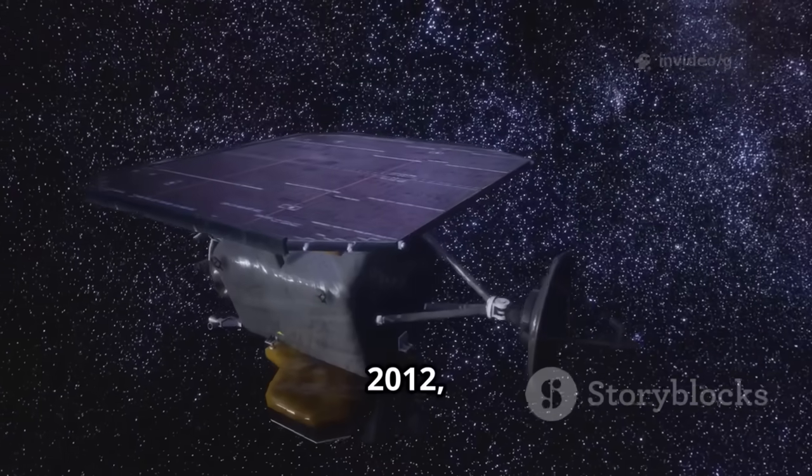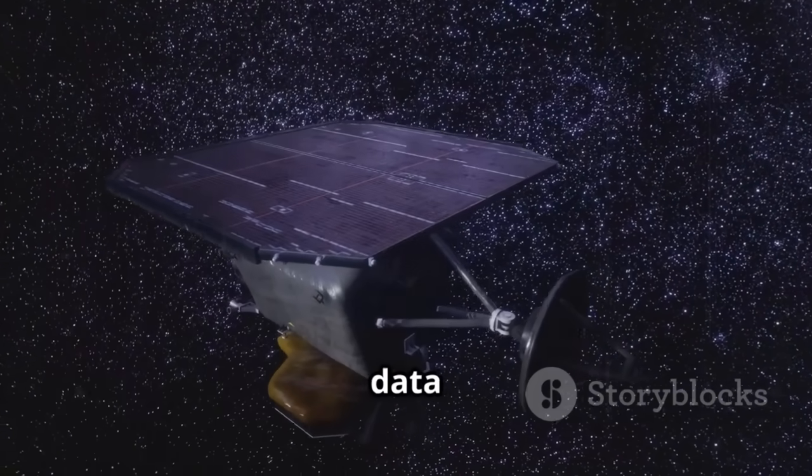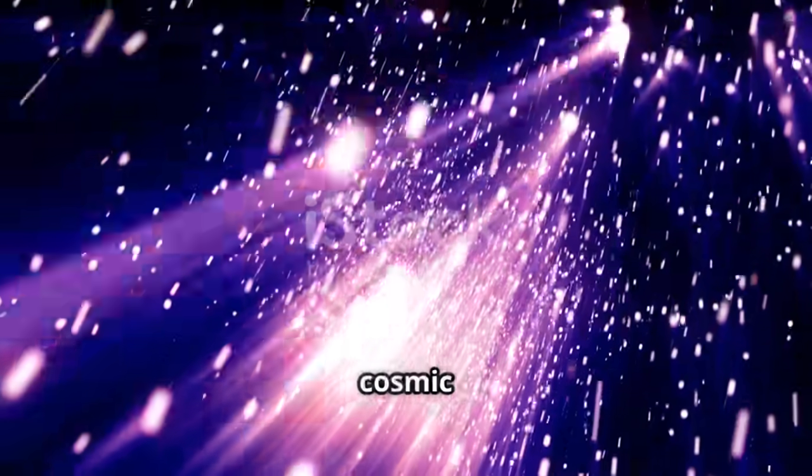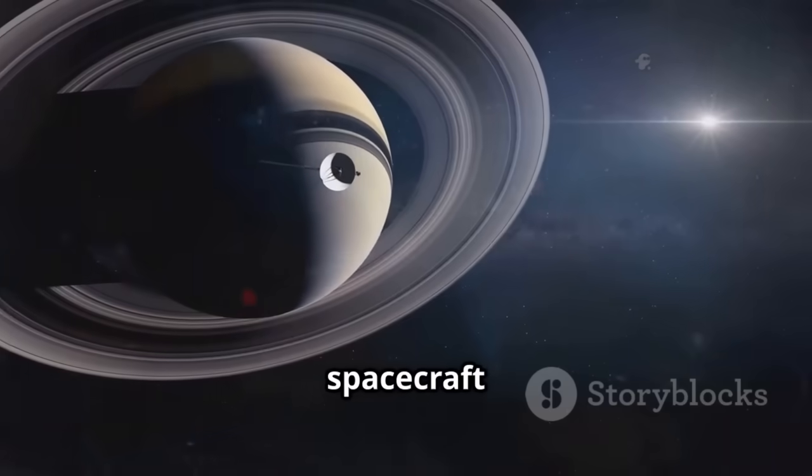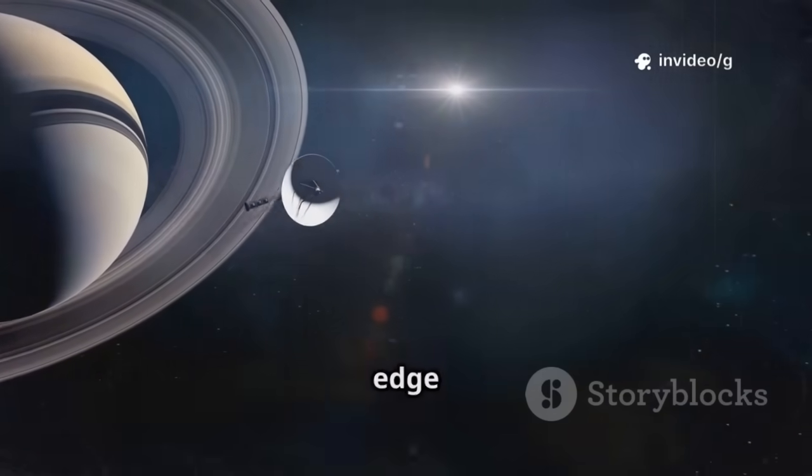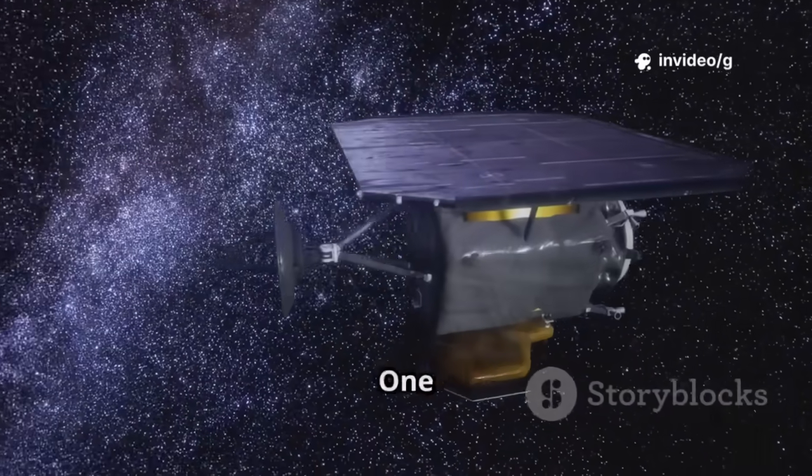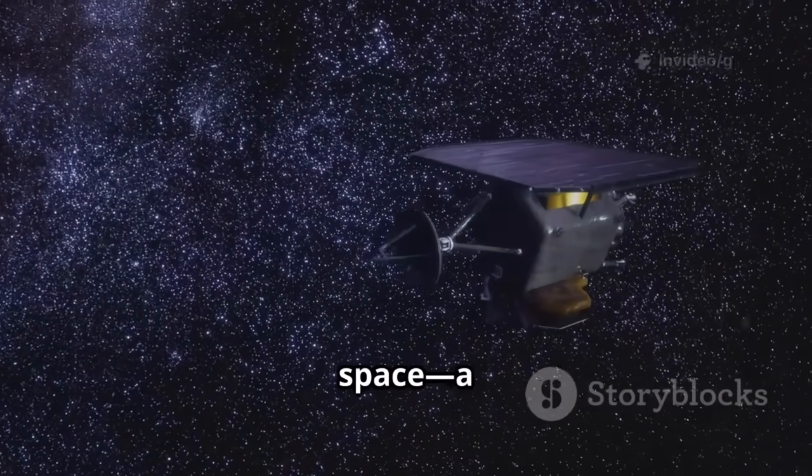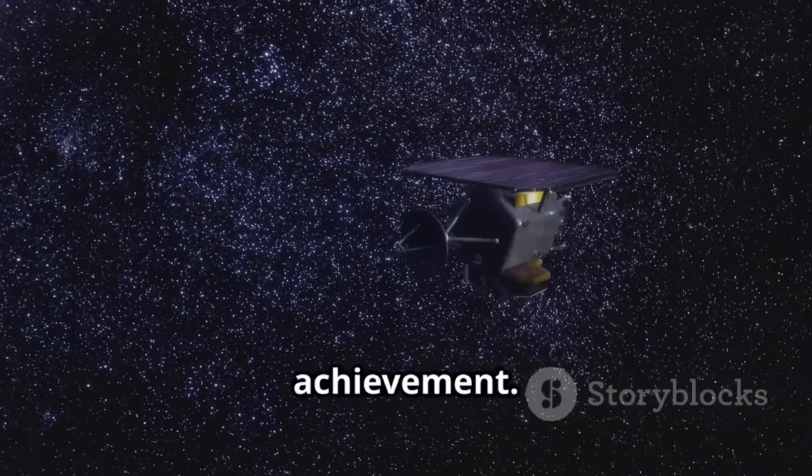In August 2012 it happened, Voyager 1's data changed dramatically, solar particles plummeted, cosmic rays spiked, the spacecraft had crossed the heliopause, the edge of the sun's influence. Voyager 1 became the first human-made object in interstellar space. A monumental achievement.